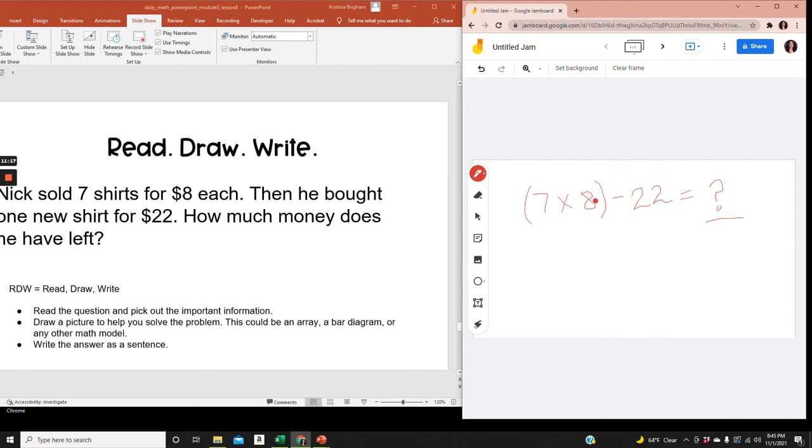So the first thing I'm going to do is multiply 7 times 8. If you don't know the answer to 7 times 8, you can use one of your strategies. You could use a 5th fact to find the answer. Or if you know the answer, you might know already that 7 times 8 equals 56. So I would first find the product of 7 times 8 using whatever strategy you need to use. The answer is 56. And then we would subtract 22 to get our answer. What is the difference between 56 and 22?